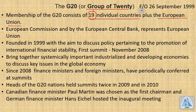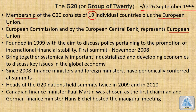G20 was founded on 26th September 1999. The membership of countries is represented by the head of state — for example, the prime minister or the president — and also by the head of the central bank and the finance minister. The European Union is represented by the head of the European Commission and the head of the European Central Bank.